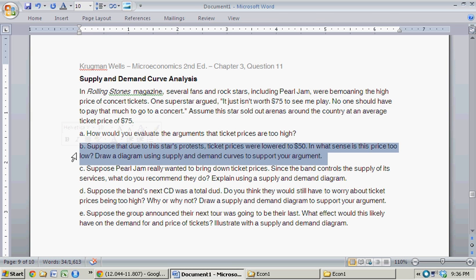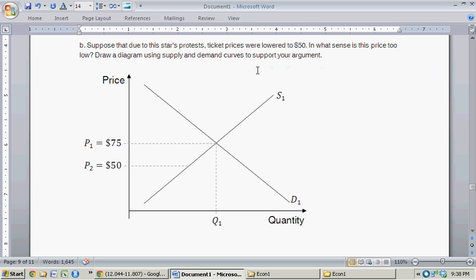So turning to point B, suppose that due to this star's protest, ticket prices are lowered to $50. In what sense is the price too low now? Draw a diagram using the supply and demand curves to support your argument. So give me one second to do this. So suppose that the prices are lowered to $50. Let's start off with this.